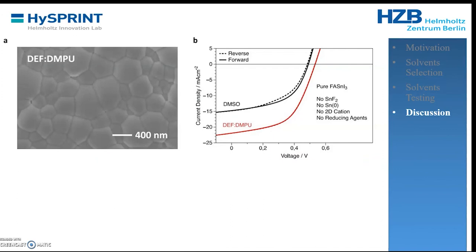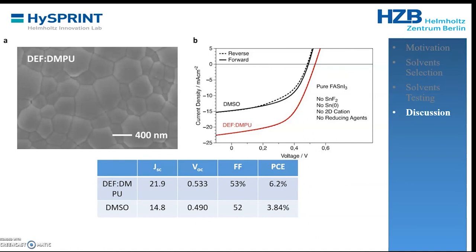Here we show the performance of the first device based on our new solvent mixture DEF-DMPU. The film morphology is excellent, with interconnected domains and no open holes — which are typically seen in tin halide perovskites. As shown in the table, we achieved a power conversion efficiency of 6.2%. This may not seem very high, but it was achieved without any additives — no tin fluoride, no passivating chemicals — just pure formamidinium tin iodide in DEF-DMPU. By comparison, making tin halide perovskite in DMSO under the same conditions without tin fluoride yields no more than 3.8%.